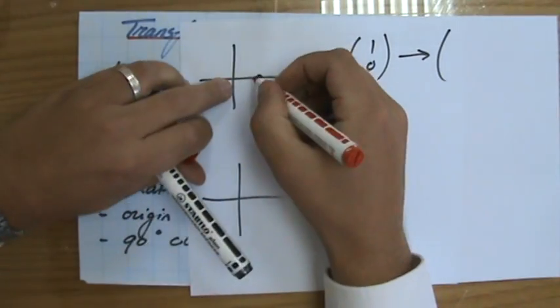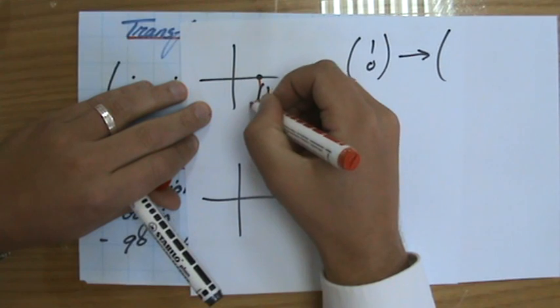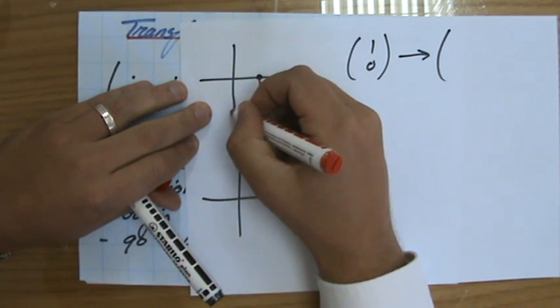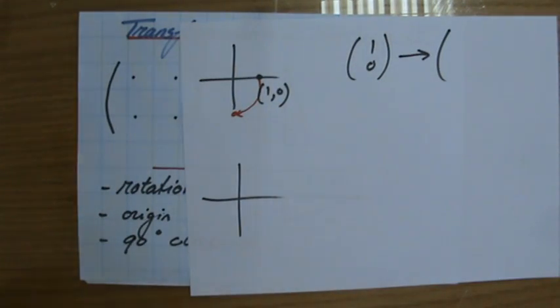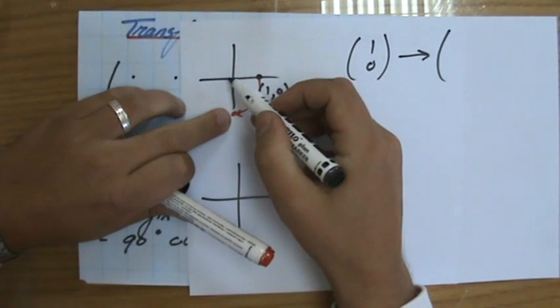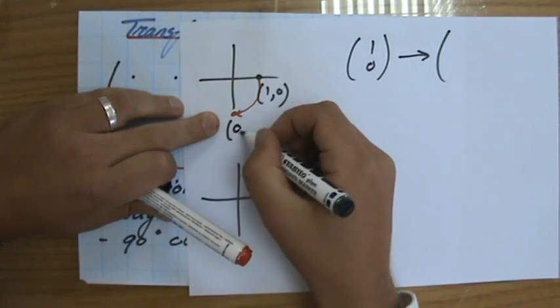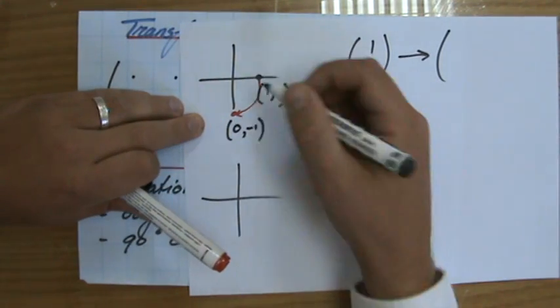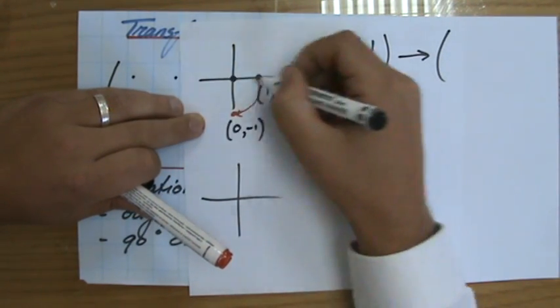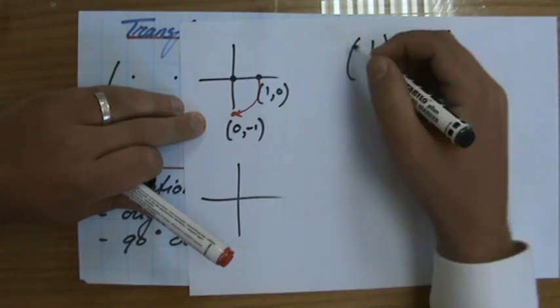Well (1,0) with a 90 degree clockwise rotation is going to be over here. So what is the coordinate going to be? It's going to be (0,-1) because it's not going horizontally, it's only going one down: (0,-1).